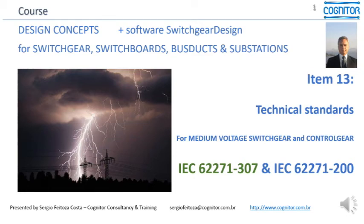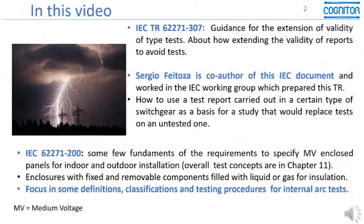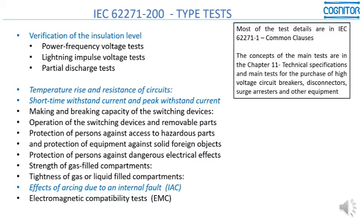Looking at IEC 62271-307 and 62271-200: after testing one item that we will call the head of one family, you may avoid many tests for the other members of the family which are not exactly equal to the one that was tested, due to an internal fault. We will go into much more detail about this in the next slides.